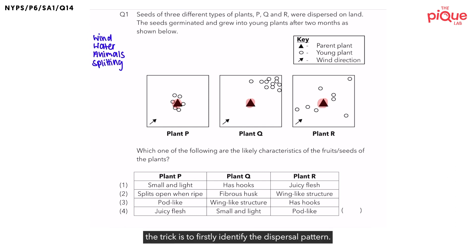For such questions, the trick is to firstly identify the dispersal pattern. Once you have identified the pattern, you can then match it accordingly to the dispersal method. So, let's take a look at plant P first. What is the dispersal pattern of plant P? They are all clustered around the parent plant. So, let's write this down first. What method of seed dispersal is this? It is splitting.